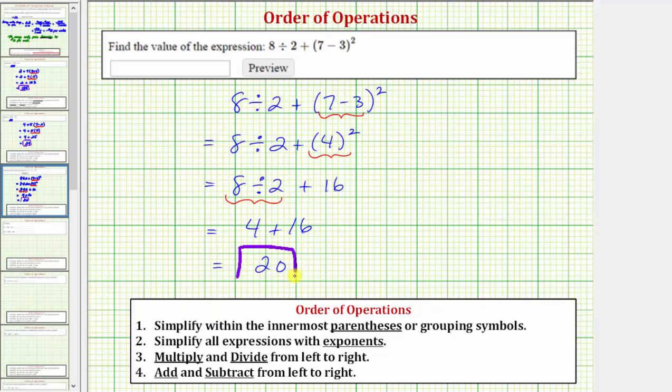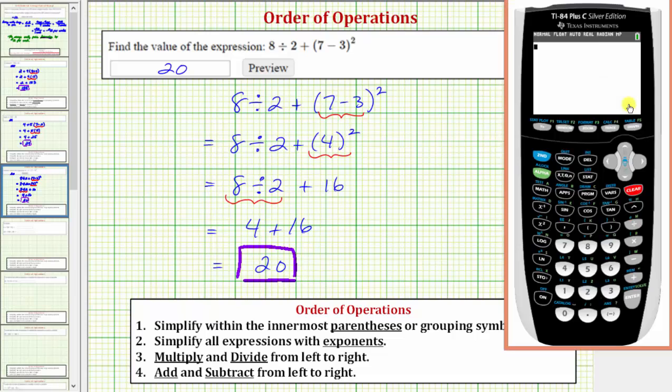So the given expression has a value of 20 or we can say it simplifies to 20. Let's also verify this on the graphing calculator. To verify the value of an expression on the calculator we simply enter the original expression in this form here. So we have 8 divided by 2 plus open parenthesis 7 minus 3 close parenthesis raised to the second power squared. So we can press the squared key here which gives us an exponent of 2. And then we press enter and notice how this does verify our value is correct.